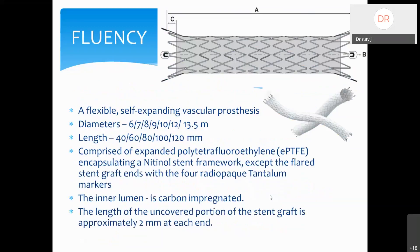Discussing the Fluency endograft briefly: it is a flexible, self-expanding vascular prosthesis available in a variety of diameters from 6 up to 13.5 mm and lengths of 40, 60, 80, 100, and 120 mm. It is comprised of expanded polytetrafluoroethylene (ePTFE) fabric encapsulating a nitinol framework, except at the flared edges at both ends, which have radiopaque tantalum markers. The inner lumen is carbon-impregnated, and the length of the uncovered portion of the stent graft is approximately 2 mm at each end.